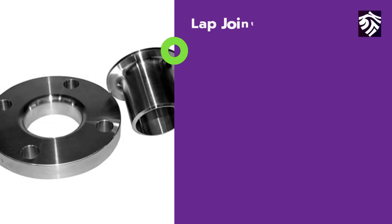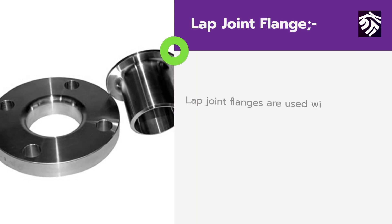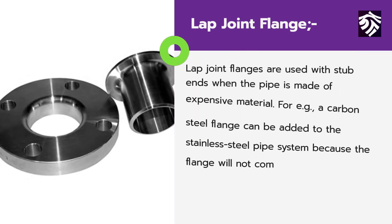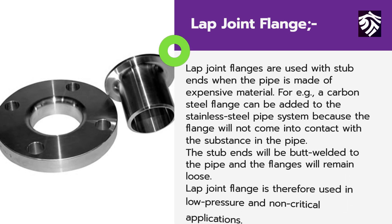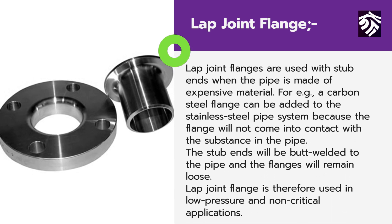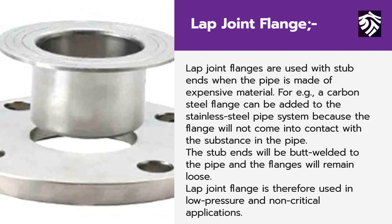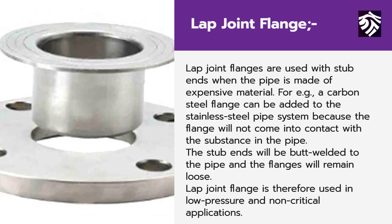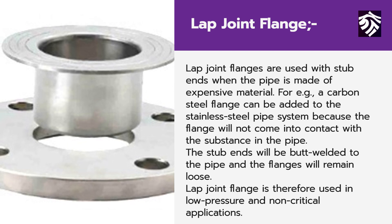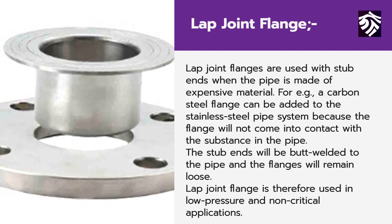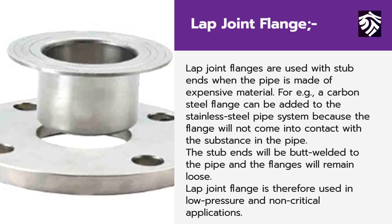Another special type of flange is the lap joint flange. Lap joint flanges are used with stub ends when the pipe is made of expensive material. For example, a carbon steel flange can be added to a stainless steel pipe system because the flange will not come into contact with the substance in the pipe. The stub ends will be butt welded to the pipe and the flanges will remain loose. Lap joint flanges are therefore used in low pressure and non-critical applications.